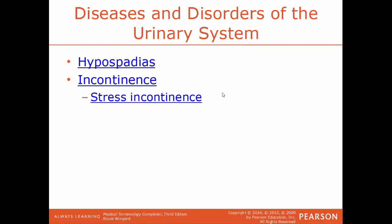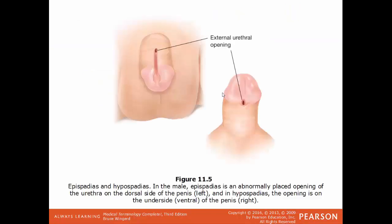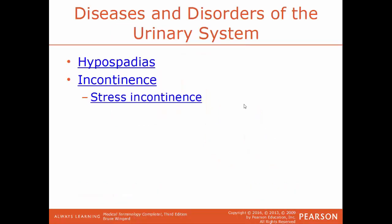Hypospadias is the malformation of the penis where the urethral opening is on the ventral side or the underside of the penis. Going back to the image, epispadias has the opening on the upper aspect, while hypospadias has the opening on the ventral side of the penis.